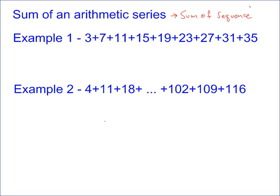The best way to think about this is to pair up the numbers. We pair the first number with the last number. When we do this, we get 38. 3 plus 35 is 38. And then if we pair the next two numbers, 7 plus 31, we also get 38.